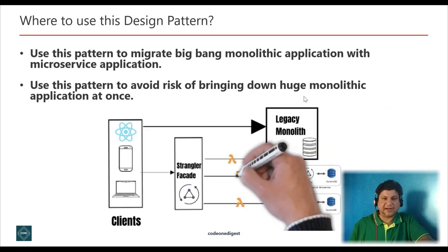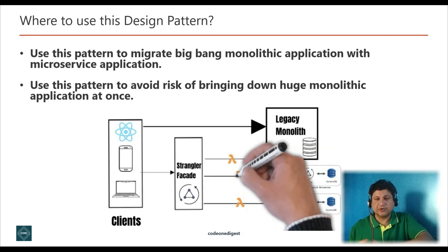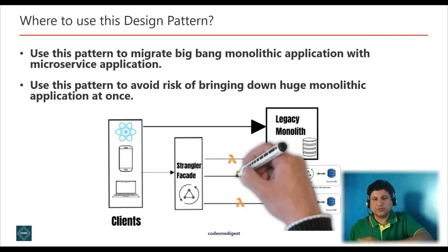Now, where should you use the strangler design pattern? Use this pattern whenever you want to migrate a big-bang monolithic application to a microservice application in a phased manner. Use it to avoid the risk of bringing down the whole monolithic application at once. Use it when you want to avoid the risk of losing your customer base — you can gradually build capabilities in the form of new microservices and start routing traffic to new services whenever they are ready, while the whole legacy application continues to operate.